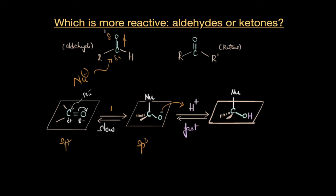We are already familiar with the mechanism of a nucleophilic addition reaction. We know that a nucleophile or an electron-rich species attacks the electron-deficient carbonyl carbon and forms a tetrahedral intermediate as you can see here.